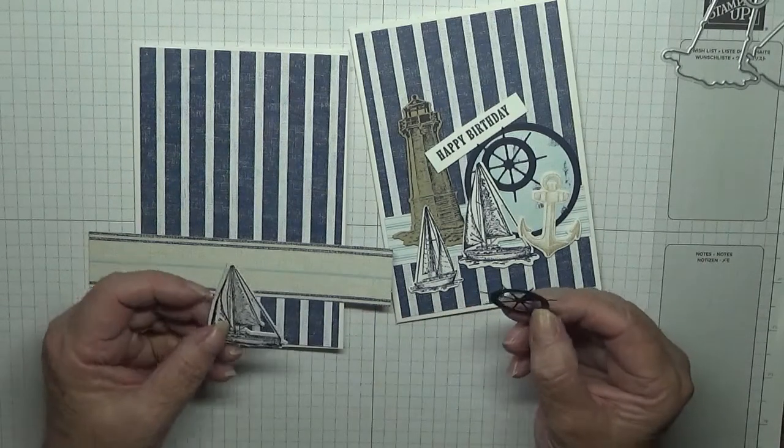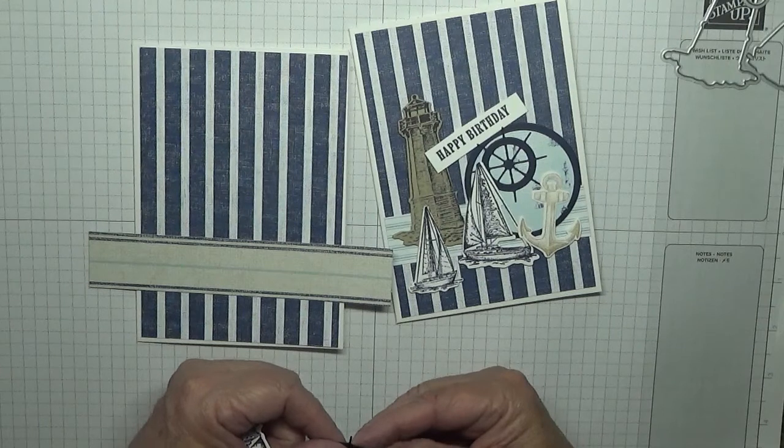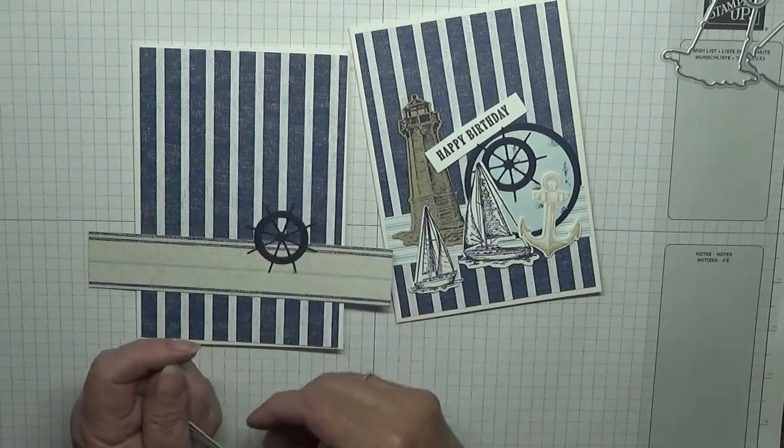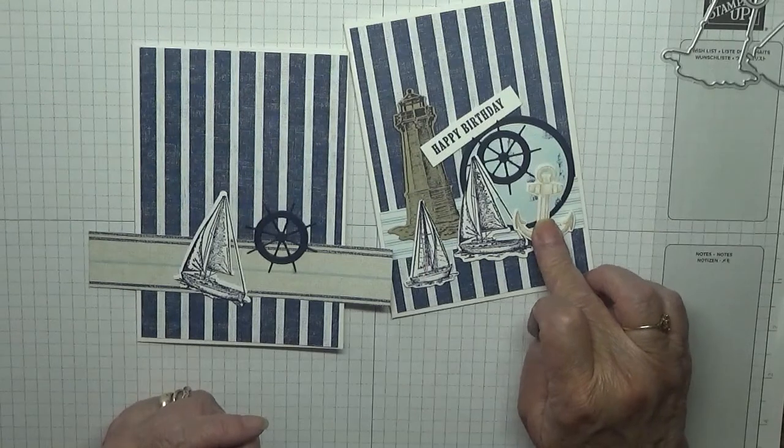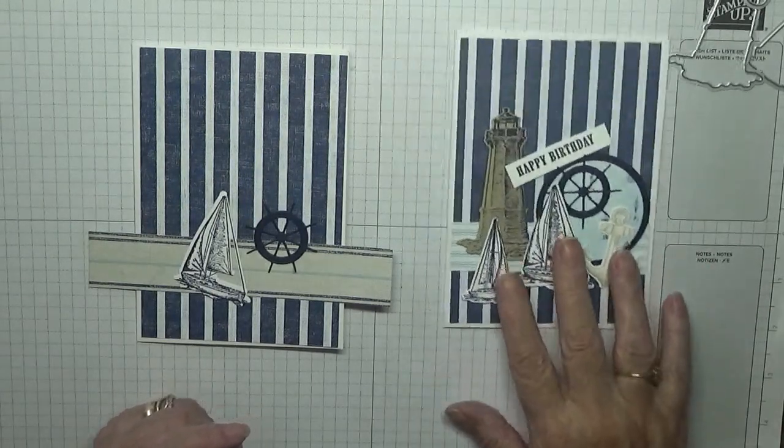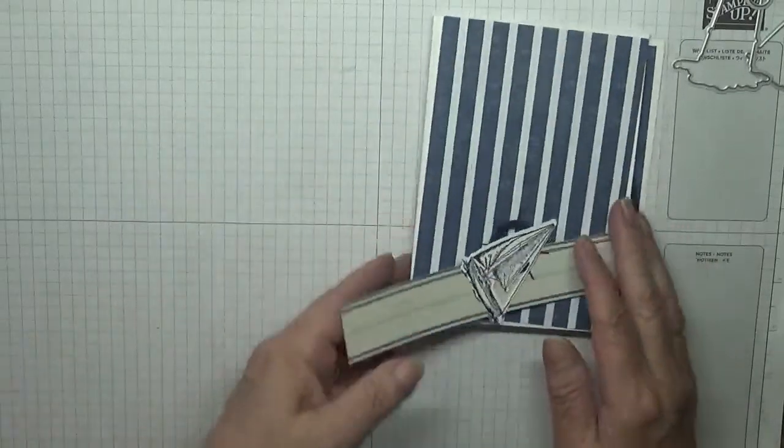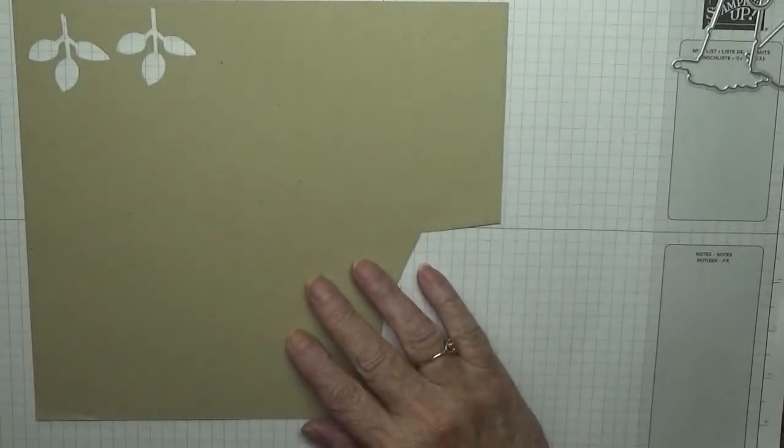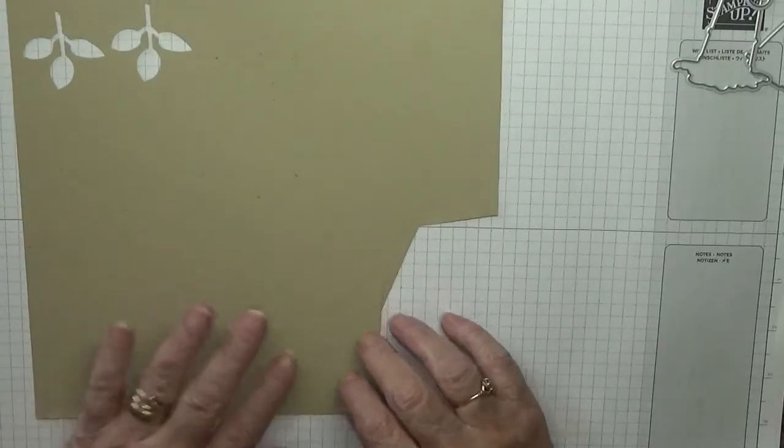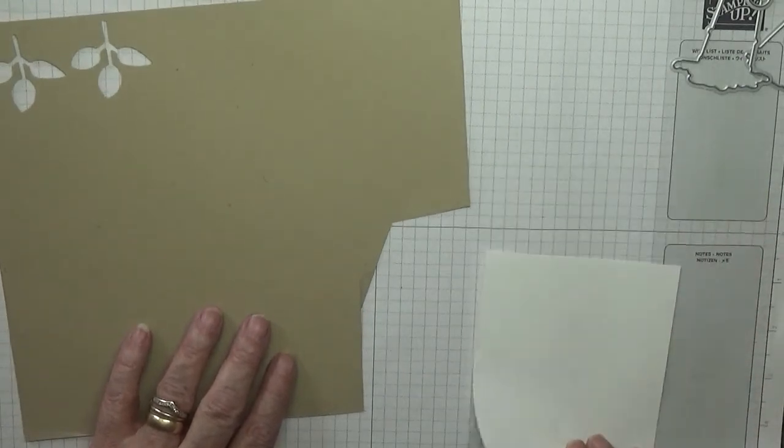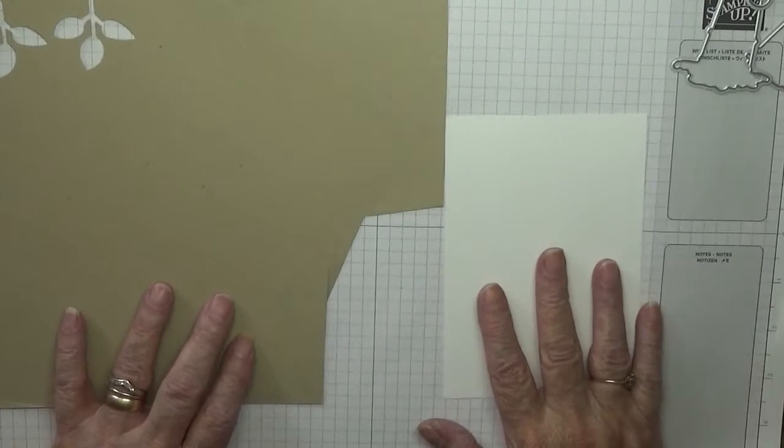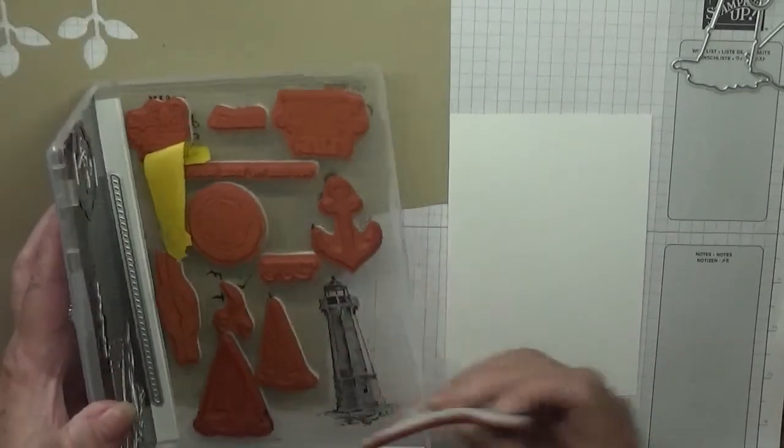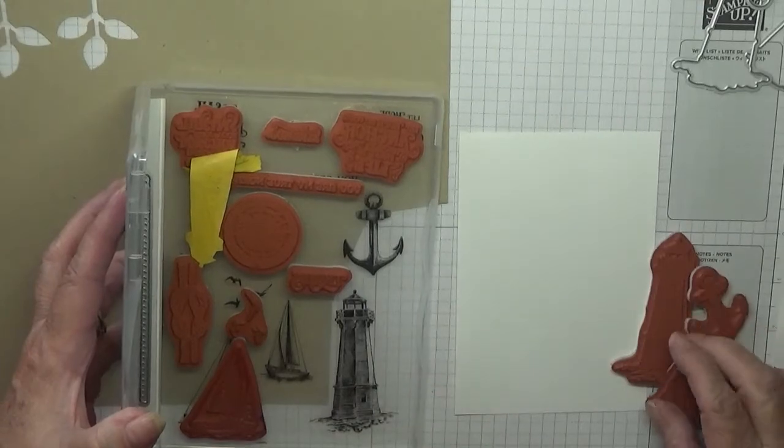I have got the big ship and the steering wheel - don't think it's called a steering wheel - already cut out. I've got the little one, the anchor and the circles, and the lighthouse to do. So let's get some stamping and cutting out done. First I've got some crumb cake here. I've got no stamps out so I want the lighthouse and the small ship.